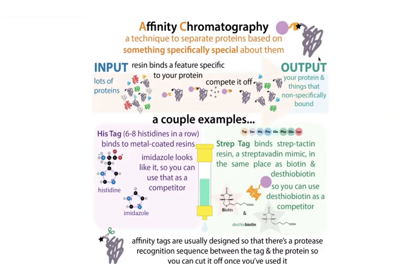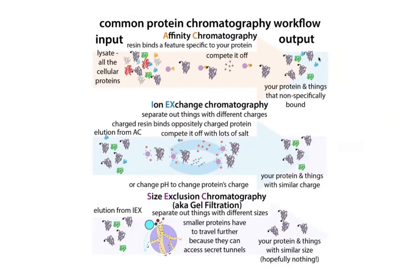Sometimes what we do is add a sequence between the tag and the protein that has a recognition site for a protease — a protein chewer — a good one that cuts just at that specific site to cut the tag off and let the protein go. But often we don't even cut the tag off if we're dealing with a small tag like a His-tag or strep tag — we might leave it on because it's not really going to interfere with things and it's a pain to remove. If you want a protein really, really pure, you'll often go through several purification steps in a row, and you want to start with the affinity chromatography step because it's the most specific.